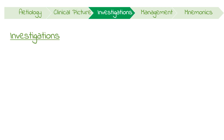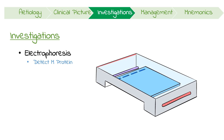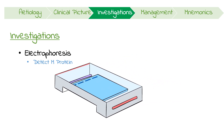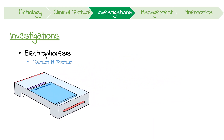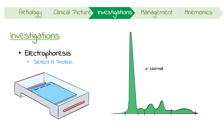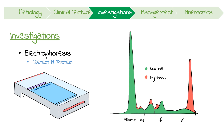Let's focus on some of the most important investigations aside from the obvious bloods. One essential diagnostic test in myeloma is a serum or urine electrophoresis. This enables us to detect the presence of monoclonal antibody. Electrophoresis works by separating proteins in our blood based on their electrical charge. The typical pattern shows a large first peak representing albumin, followed by smaller peaks called alpha, beta and gamma. Antibodies show up in the gamma peak and will spike if they're excessively high, like in myeloma. This is why monoclonal proteins, or M proteins, are also described as spike proteins.